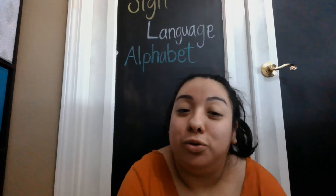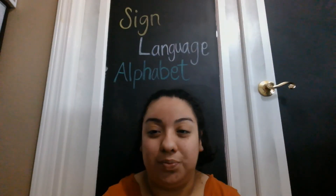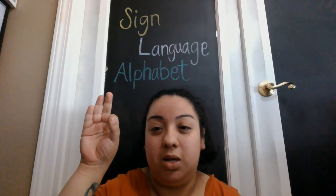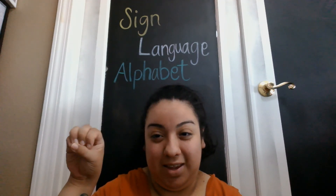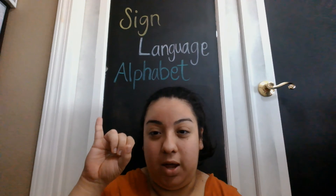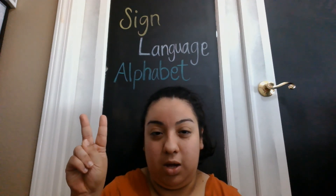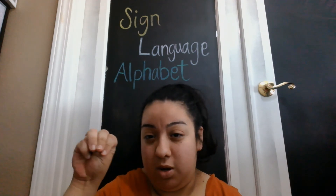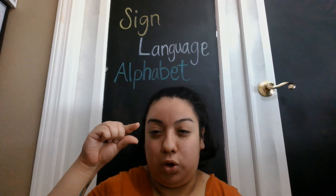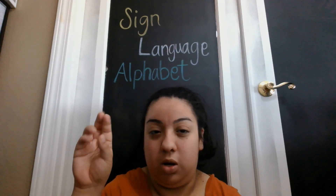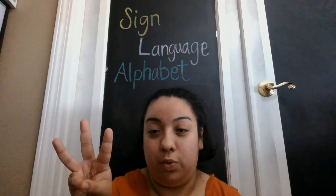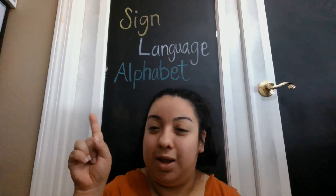So now we're going to go ahead and try our best to do the whole alphabet all together at the same time. Okay, let's try. A, B, C, D, E, F, G, H, I, J, K, L, M, N, O, P, Q, R, S, T, U, V, W, X, Y, and Z.